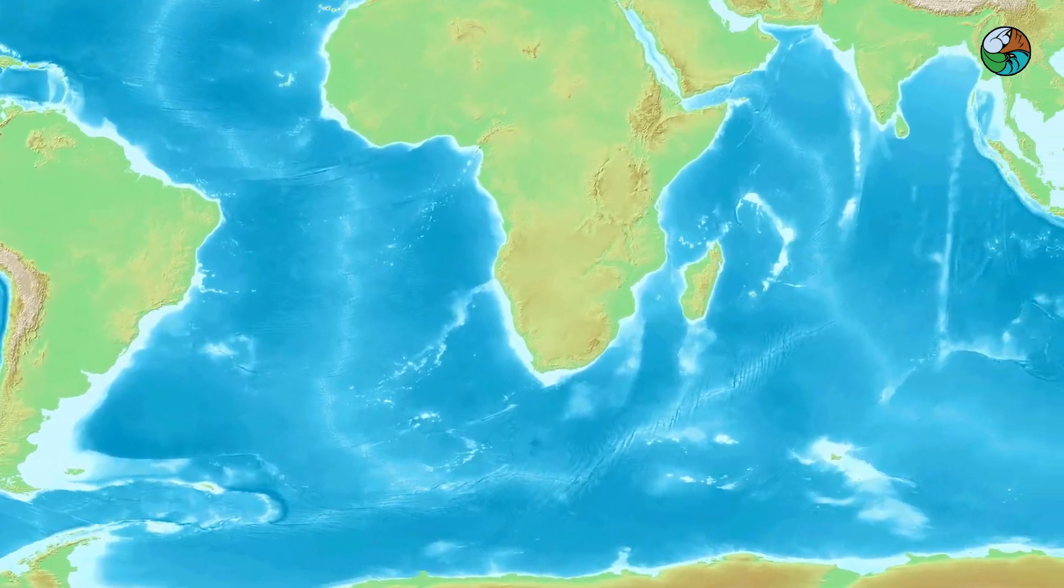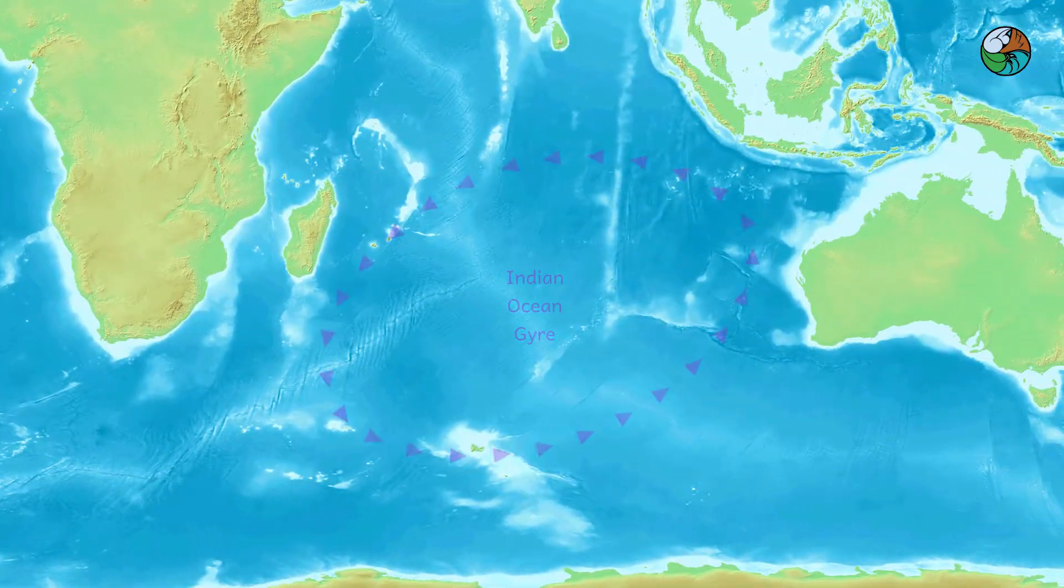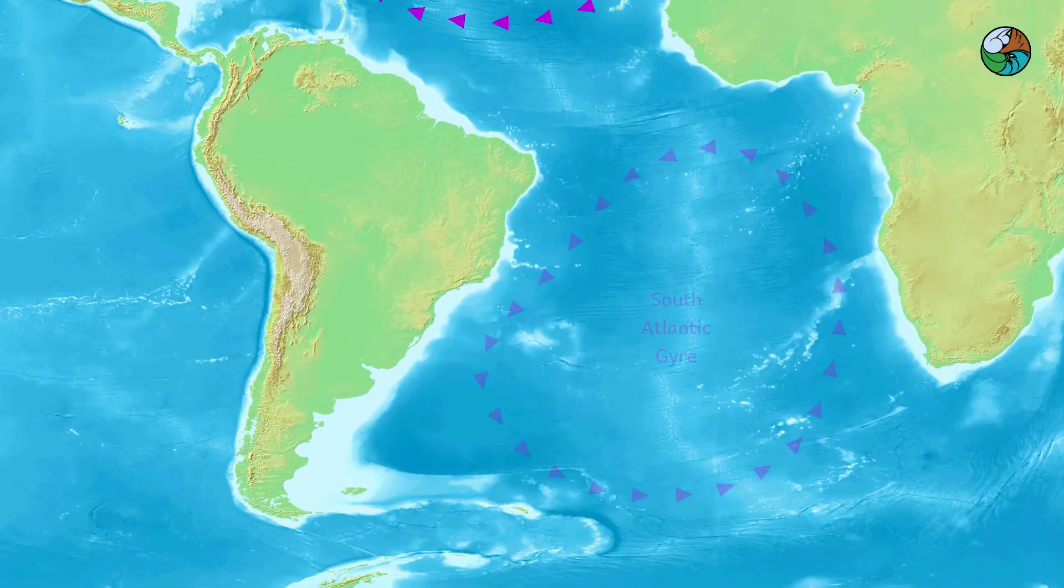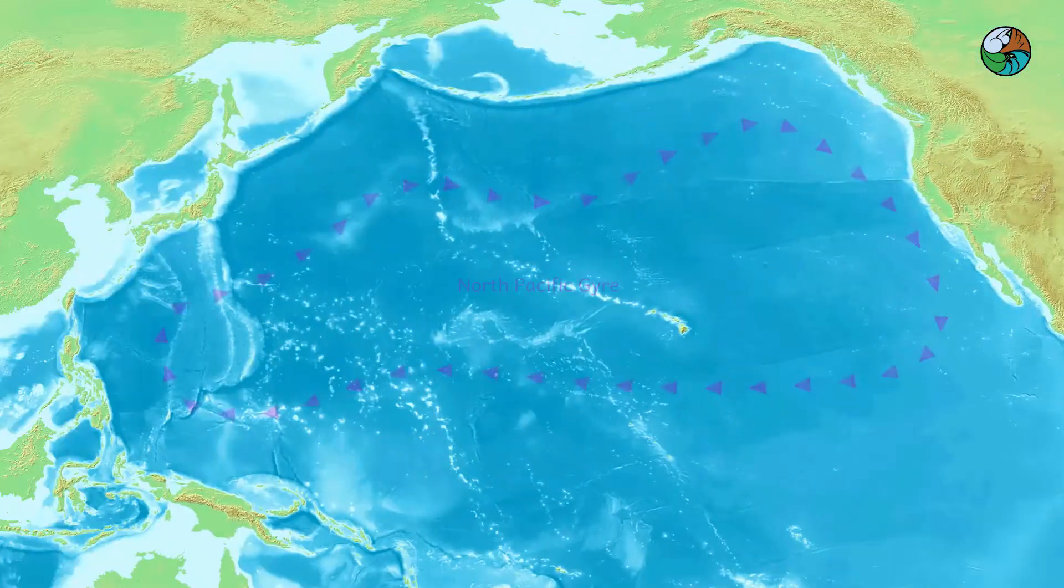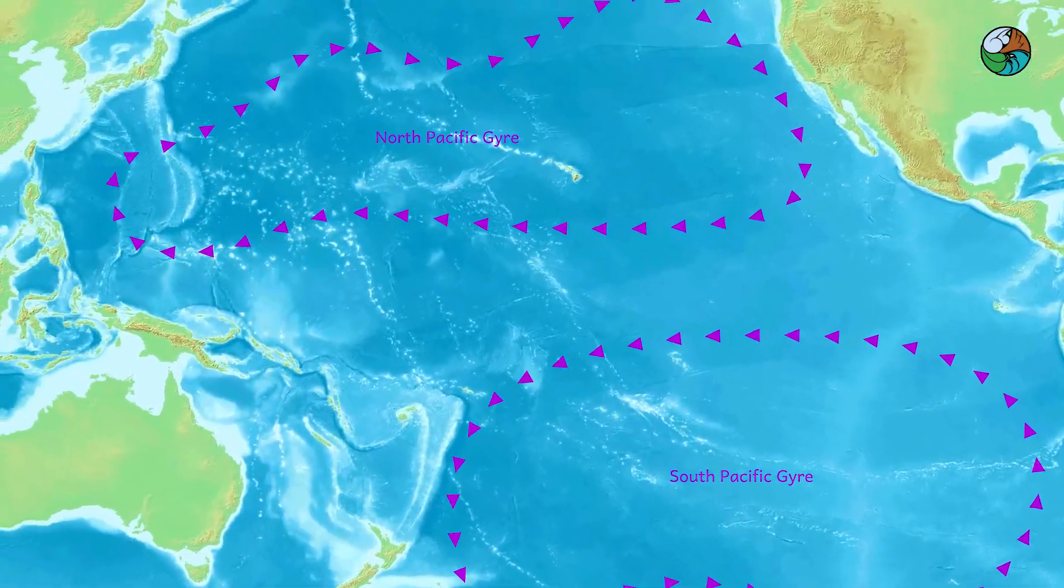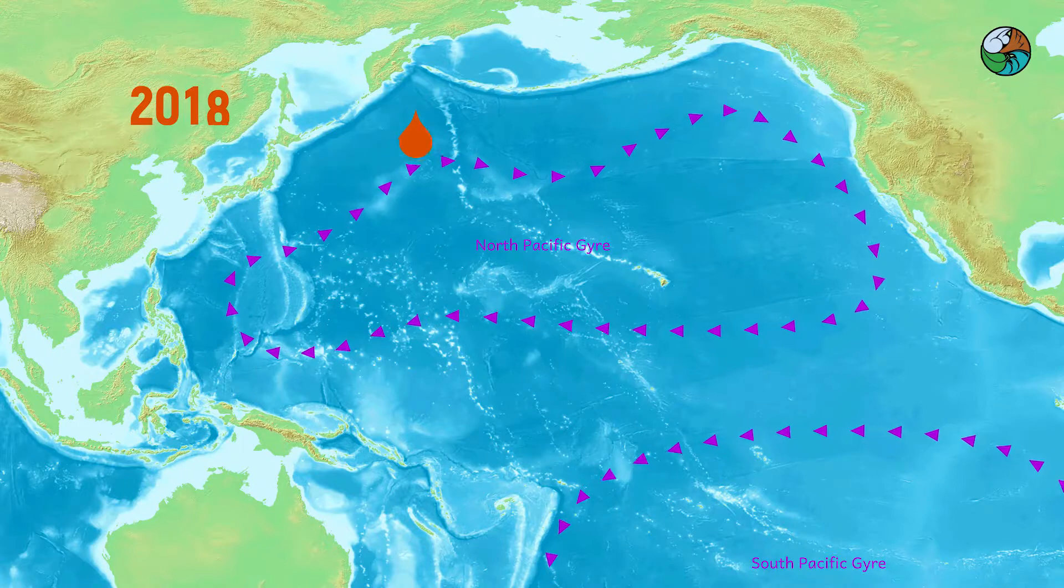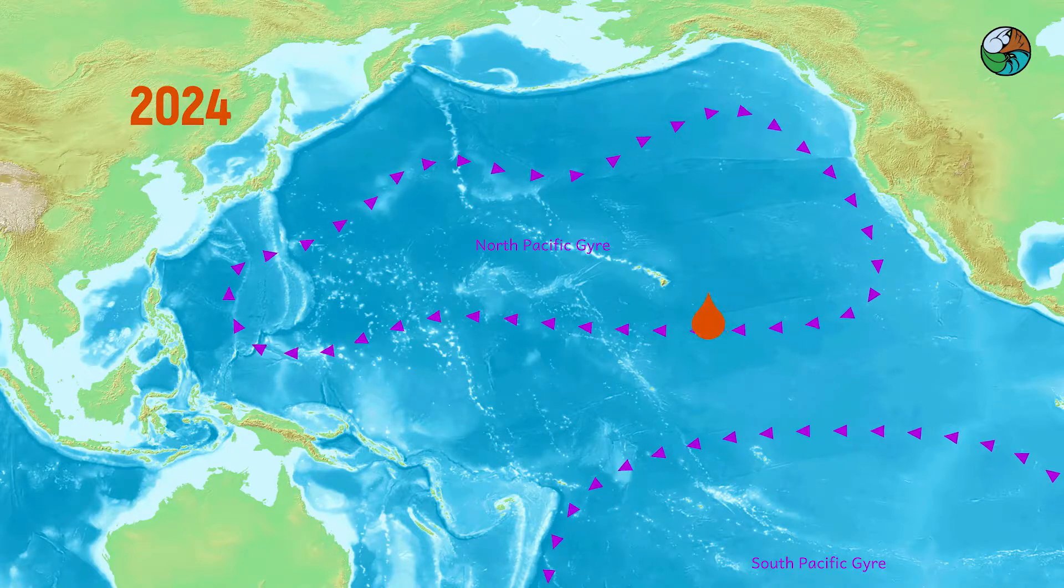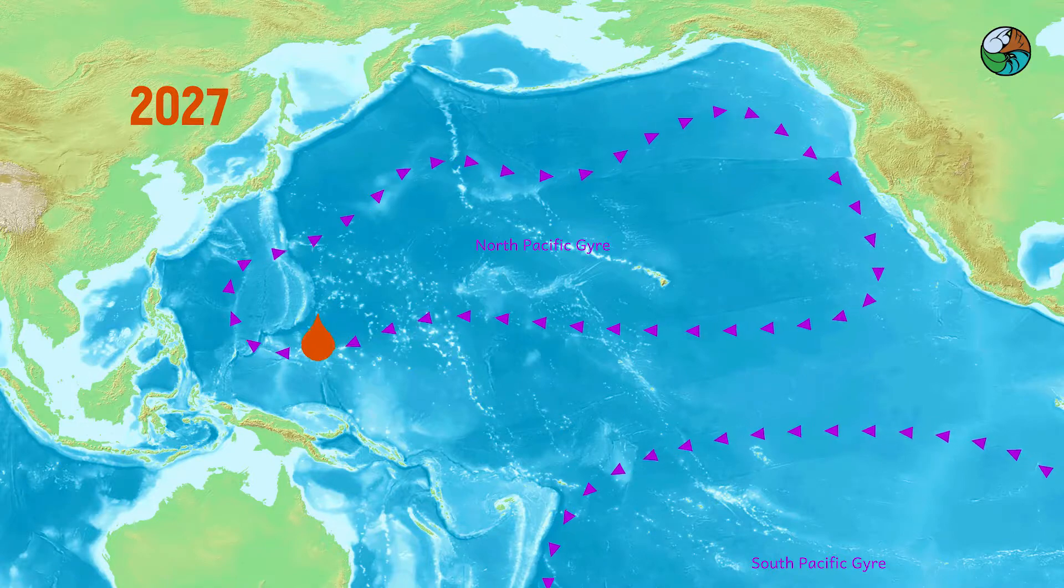There are five major ocean gyres: Indian Ocean Gyre, North Atlantic Gyre, South Atlantic Gyre, North Pacific Gyre, and South Pacific Gyre. It can take tens of years to travel a complete cycle in these ocean gyres. There are many other minor gyres out in the open oceans.